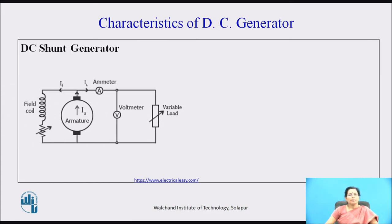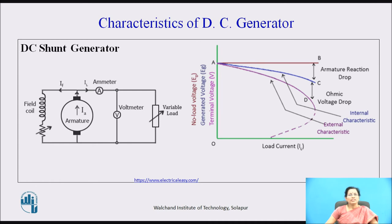For a DC shunt generator, the armature winding and field winding are connected in parallel. An ammeter and voltmeter are connected as shown in the figure. A variable load is connected across the armature to find out the internal and external characteristics. AB is the no-load voltage that remains constant for any load. For internal characteristics, AC shows that due to the demagnetizing effect of armature reaction, the voltage decreases. As the load current increases, the terminal voltage starts decreasing.